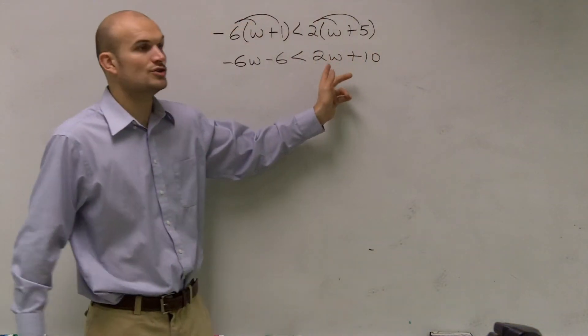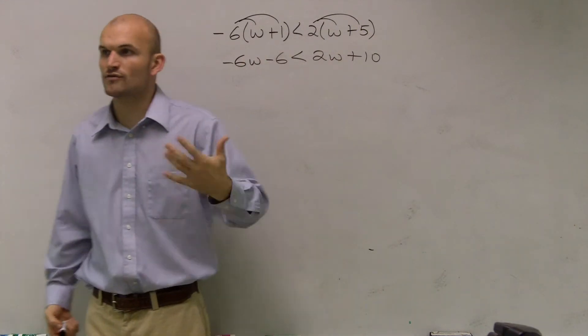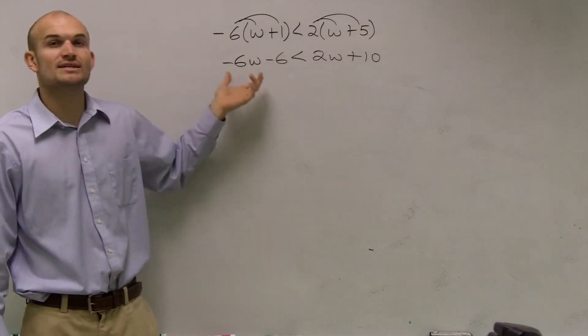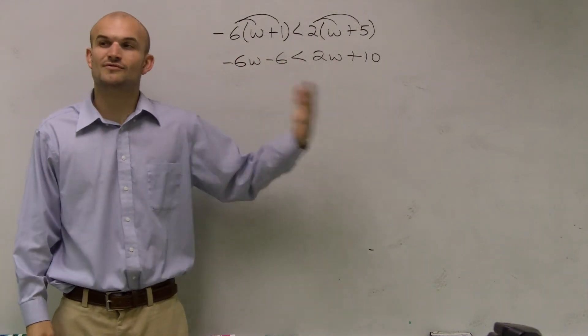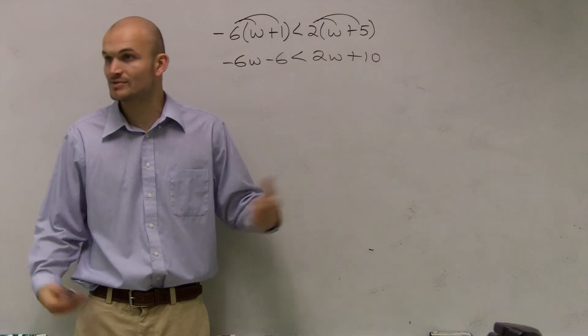Now, you could also subtract the 2w on both sides. But like I said, I've told you guys over and over, I prefer to always get rid of the smaller variable. Because then it just avoids negative numbers. And that's really helpful with inequalities to avoid negative numbers.